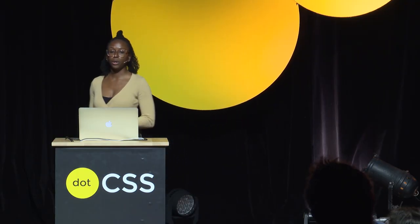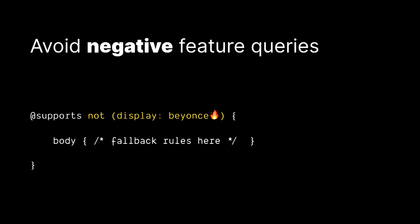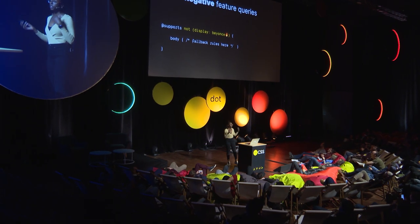The good thing is that it doesn't actually matter that feature queries aren't 100% supported, because if we use them in a certain way, we can still get the benefit of them. The best way is to focus on using positive feature queries — checking to see if a particular feature is supported — as opposed to negative feature queries, where we're checking to see if a feature is not supported. If a browser doesn't support feature queries, it's probably also more likely that it won't support whatever feature you're trying to query on, so you'll probably still have the outcome you wanted.